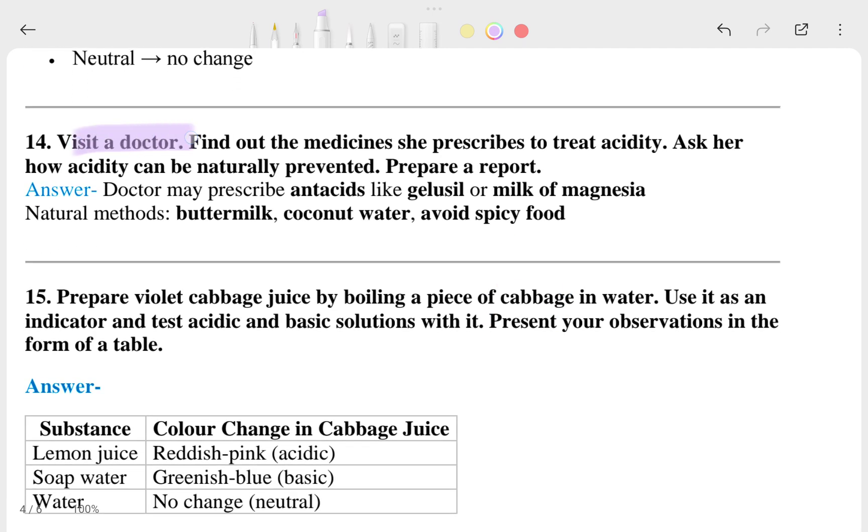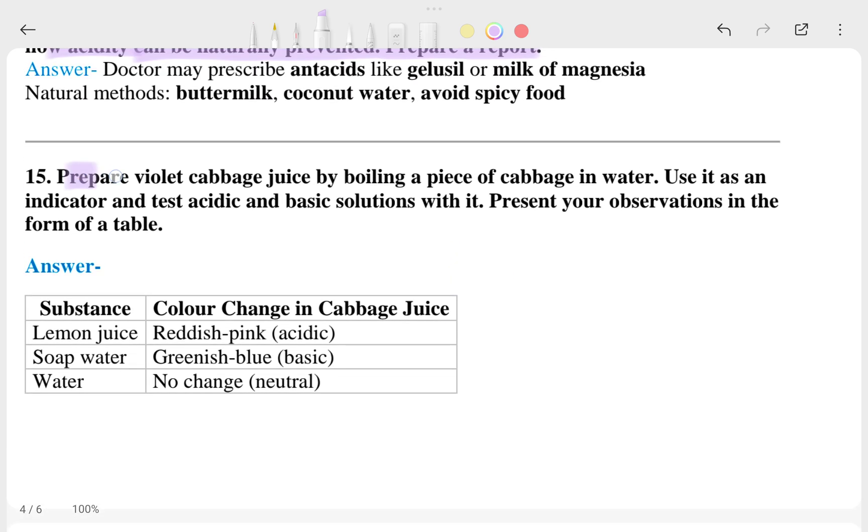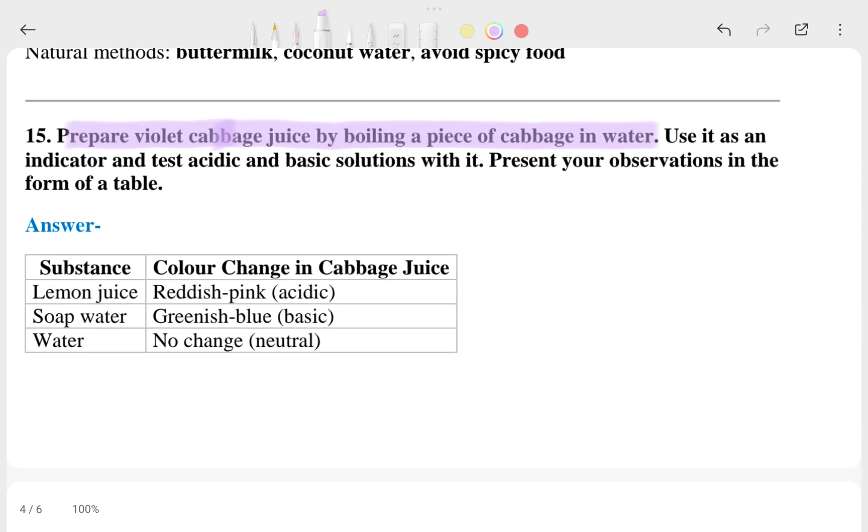Question 14: visit a doctor, find out the medicine prescribed to treat acidity. Ask how acidity can be naturally prevented and prepare a report. Question 15: prepare boiled cabbage juice by boiling pieces of cabbage in water. You can read the next one; this is the answer.